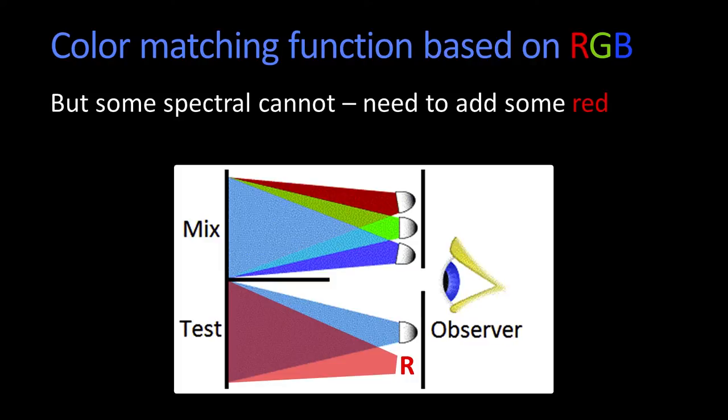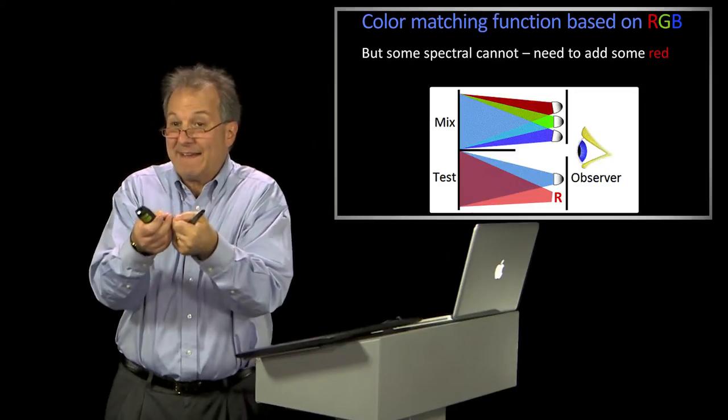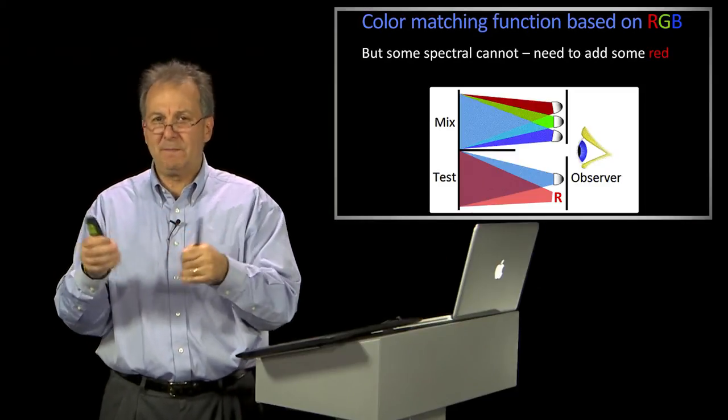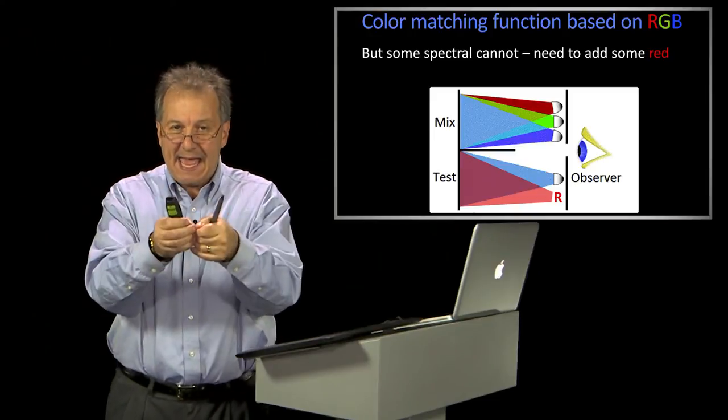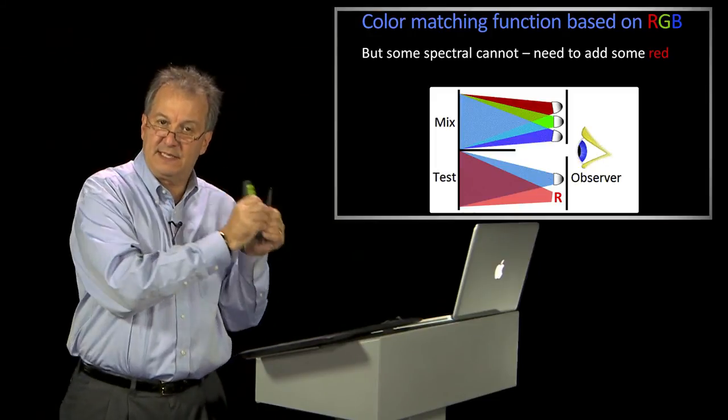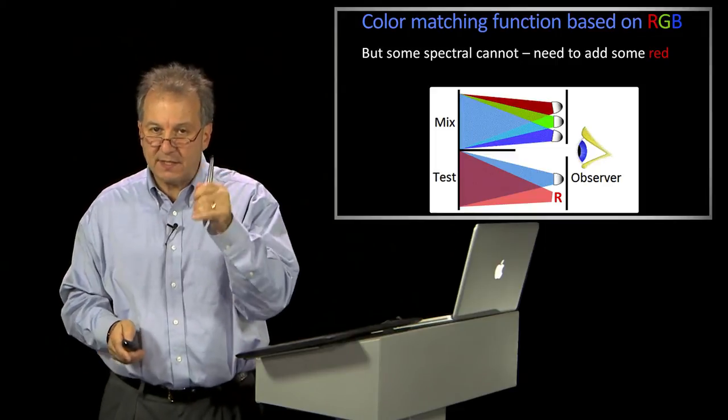That is in some sense, in the mixture, you had to sort of have negative red light. And of course, we couldn't make negative red light. So what you would do is you would add some positive red light to the test thing. So that's the first thing to realize.